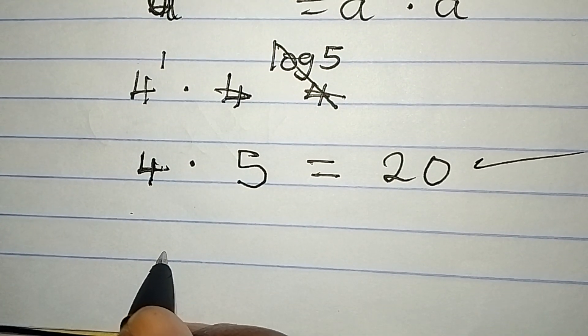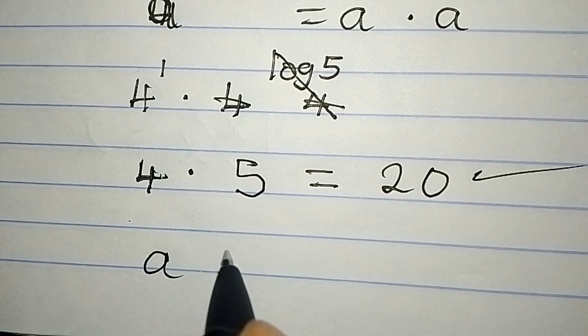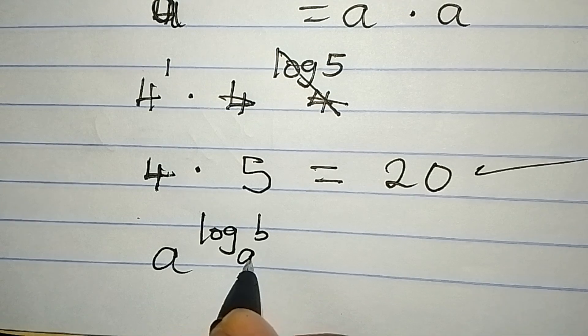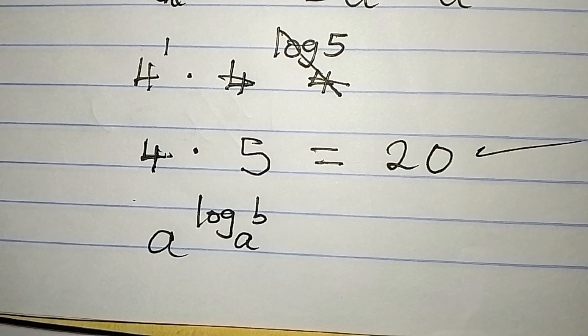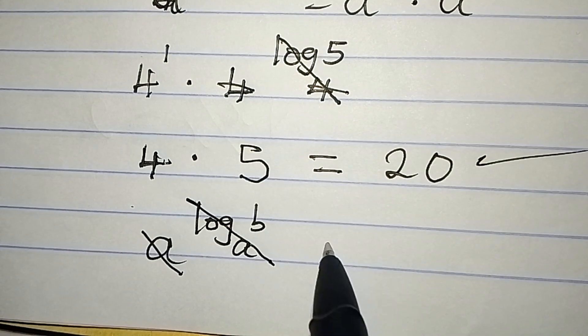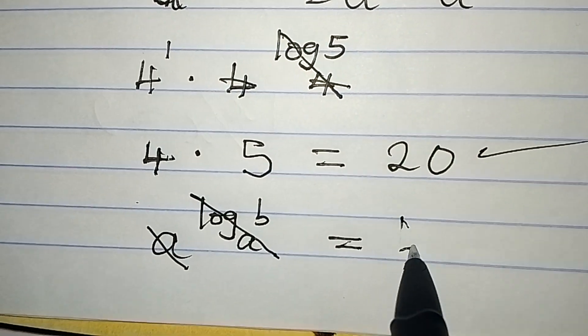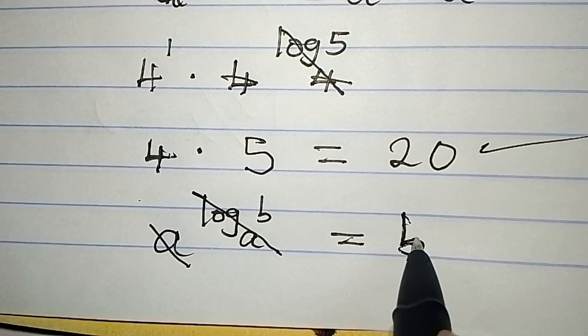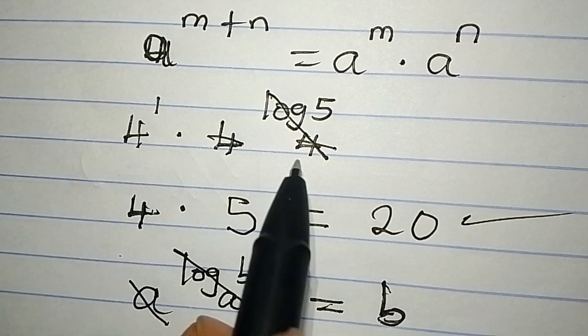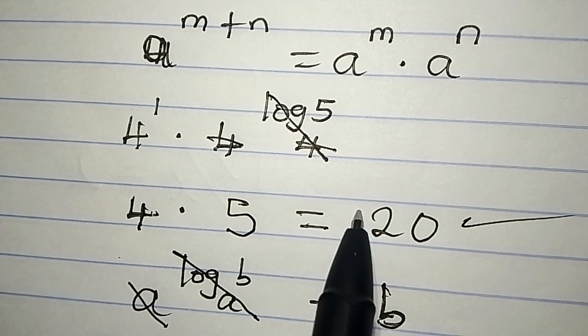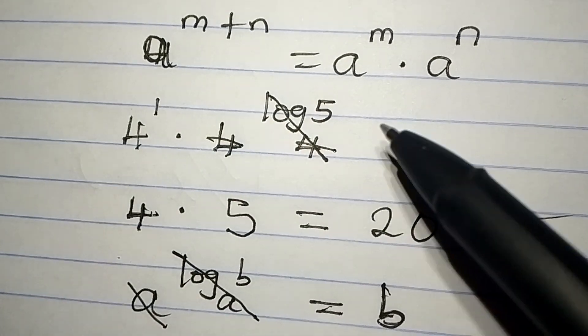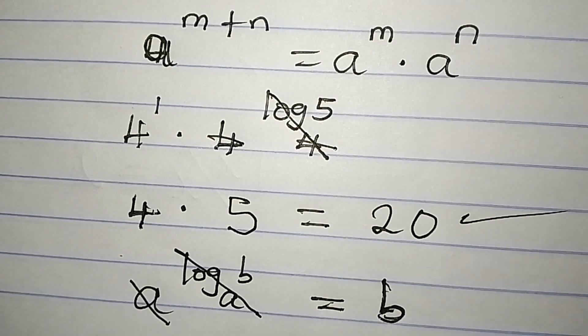If you have a to the power of log b to base a, this means that this and this can cancel and your answer will be b. That's the same thing I did over here. This will cancel the whole of this and we'll multiply 4 by 5. Thank you for watching.